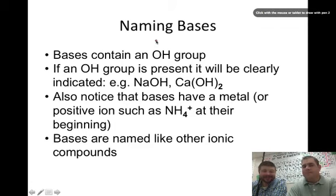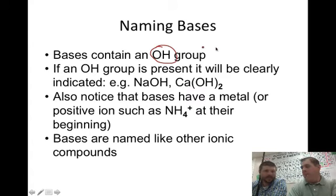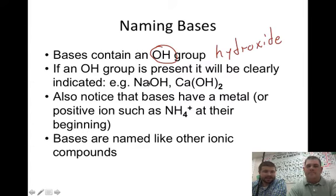And this can get a little confusing. So we're just going to kind of do a brief introduction here to naming acids and bases. A base is just a type of compound in chemistry, and you deal with bases every day. But a base usually has an OH group attached to it. And an OH is a polyatomic, and what do we call that polyatomic? Hydroxide. Right. So if the OH group is present, it can clearly be indicated as a base.